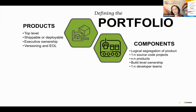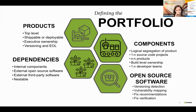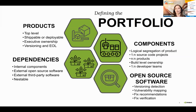We also needed to show dependencies in the database - how things are related. We have internal components, external open source software, and external third-party software, with nested relationships built in. Since our first service was open source scanning, we highlight open source items to track versioning and vulnerability mapping. We also have a nightly service that checks all source code repositories for commits and rescans to verify whether a fix has been applied.